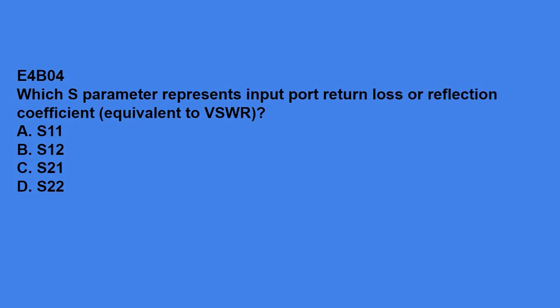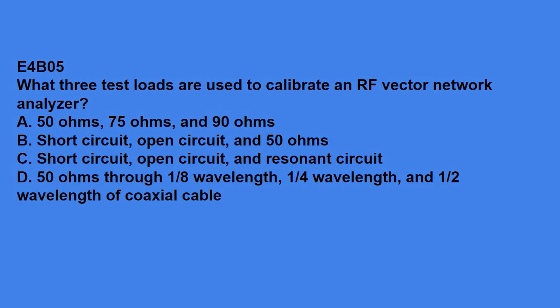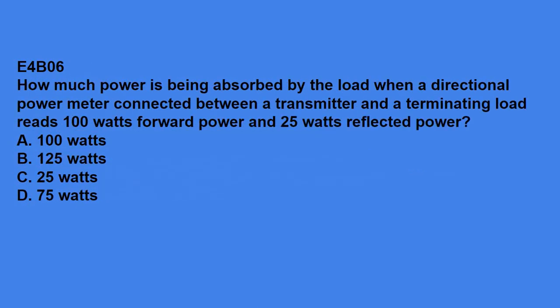E4B04, which S parameter represents input port return loss or reflection coefficient equivalent to VSWR? Answer is S11. E4B05, what three test loads are used to calibrate an RF vector network analyzer? Answer is short circuit, open circuit, and 50 ohms. E4B06, how much power is being absorbed by load when a directional power meter connected between a transmitter and terminating load reads 100 watts forward power and 25 watts reflected power? Answer is 75 watts. E4B07, what do the subscripts of S parameters represent? The port or ports at which measurements are made.